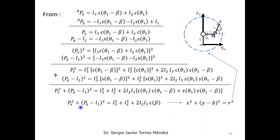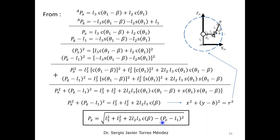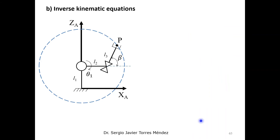If we select the z coordinate, as we said, we can find an equation for x as a function of the z coordinate. Now for the inverse kinematic equations, we are going to use one of these equations. Remember that this is the case where we have one degree of freedom, theta1, and one coordinate — the z coordinate.